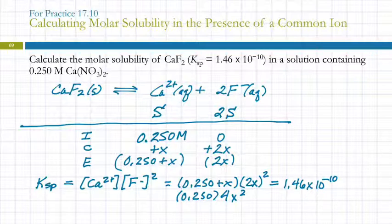And so I can solve that. It's going to be the square root of 1.46 times 10 to the minus 10 divided by 0.25 and divided by 4. Anybody else get that?